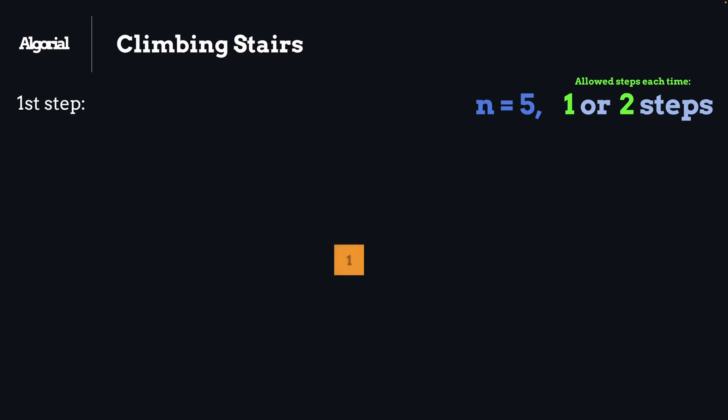Let's say we have one stair. That is obvious that we could only take one step here. What about two? We will have two solutions. One will be taking one step at a time and second we will have two steps at once. So we will have two possible ways: one and one, or just only two.